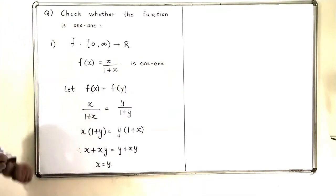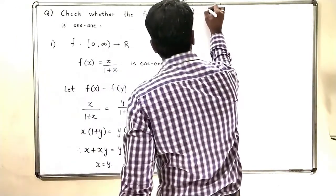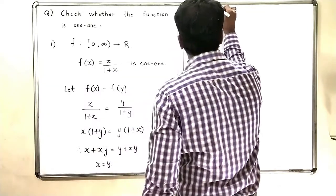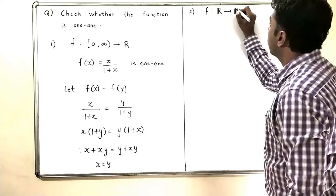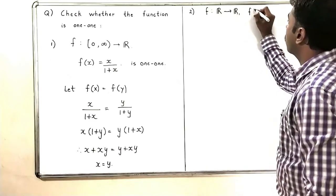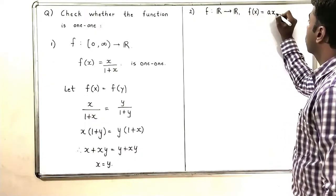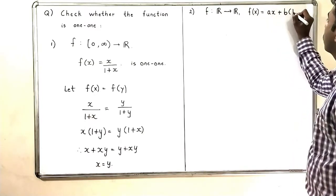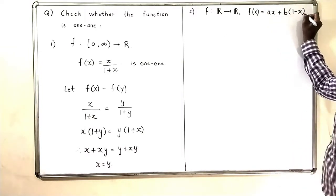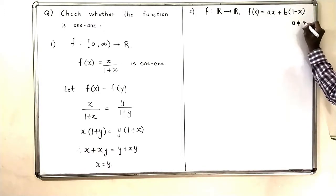Let us take one more example. I am going to take a function f from ℝ to ℝ, and define it by f(x) = ax + b(1 - x), where a and b are not equal.